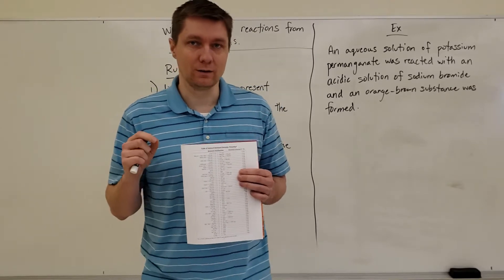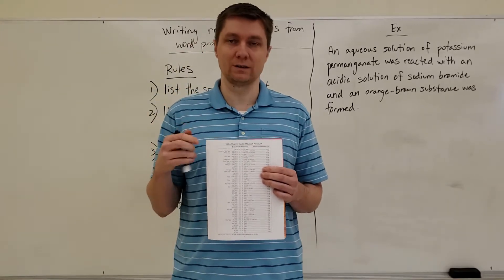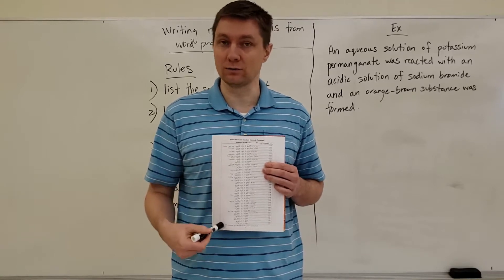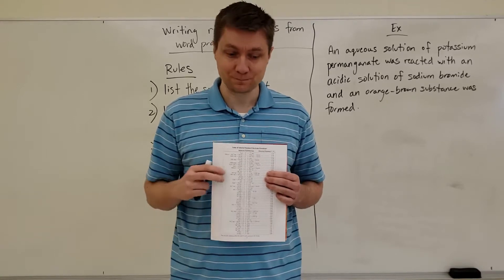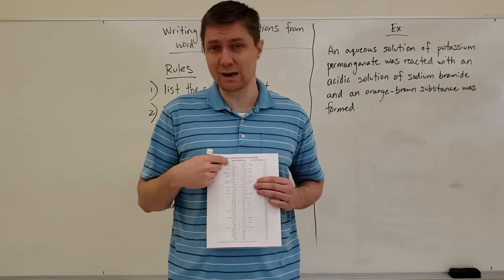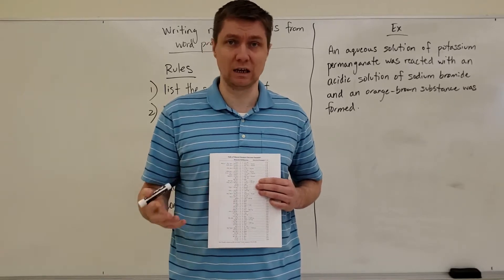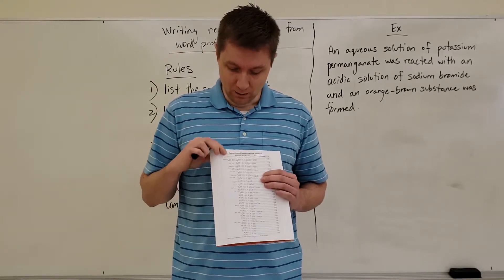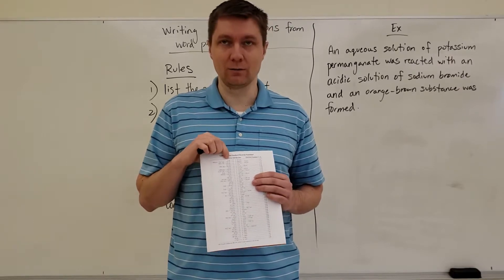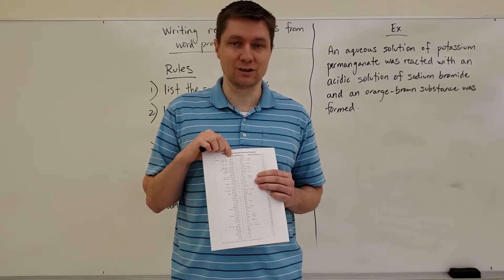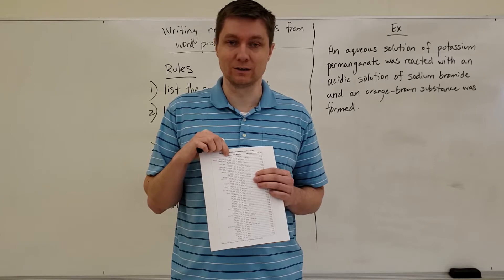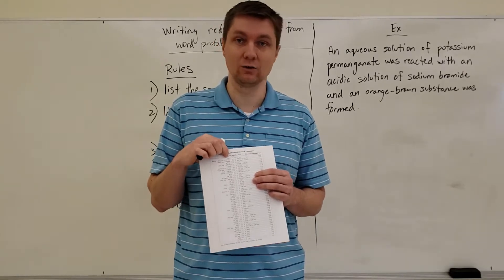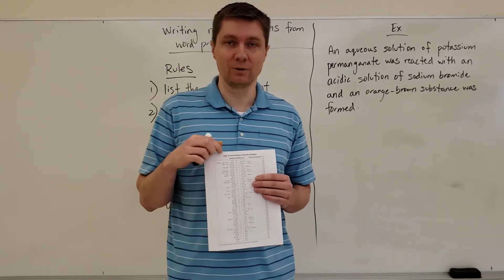The important thing to note is that all of these reactions are listed in order of strength. These are reactions that show substances gaining electrons — that's what reduction is. If you look at the very top, the reduction half reaction at the very top is fluorine gaining two electrons.